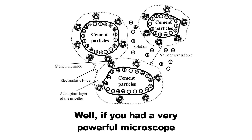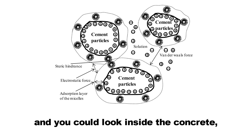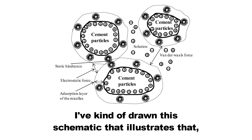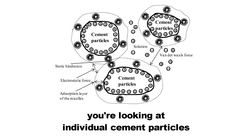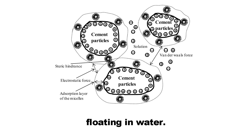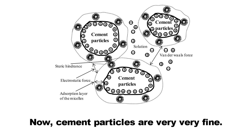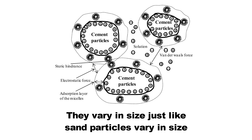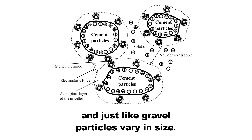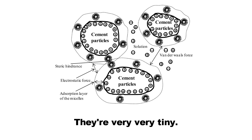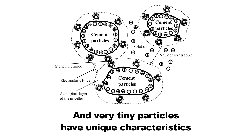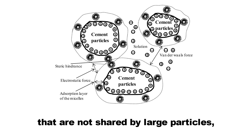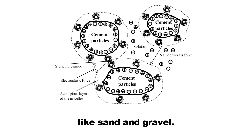Well, if you had a very powerful microscope and you could look inside the concrete — I've drawn a schematic that illustrates that — you're looking at individual cement particles floating in water. Cement particles are very, very fine. They're roughly a tenth the diameter of a human hair. They vary in size, just like sand particles vary in size, and just like gravel particles vary in size. But they're very, very tiny.